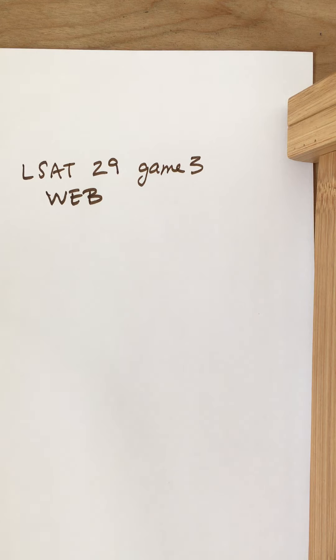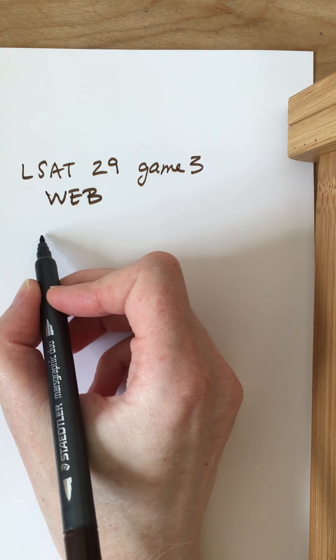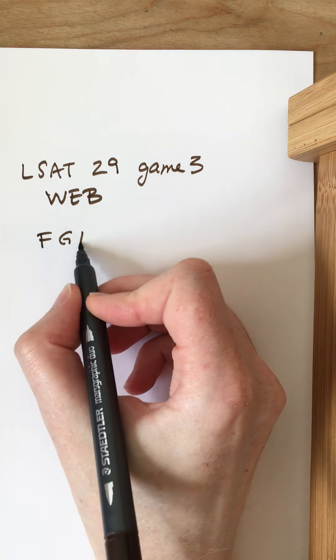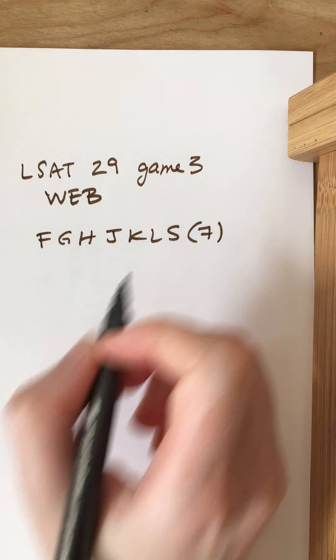We have seven players for this one, so they'll be represented by the following letters: F, G, H, J, K, L, and S. Seven.